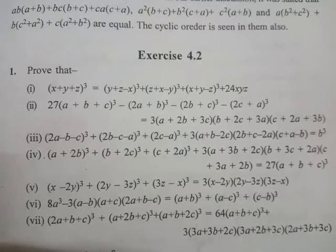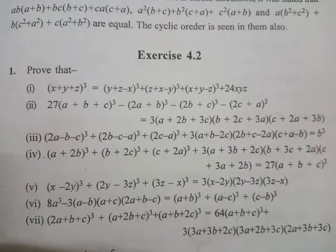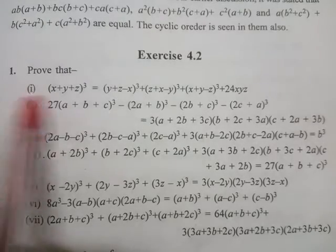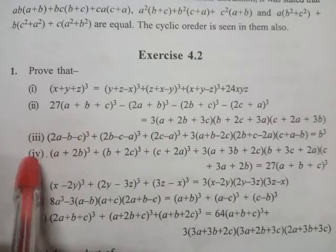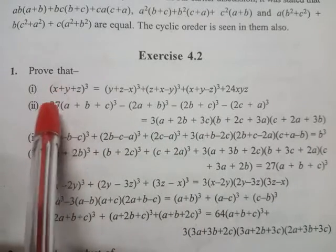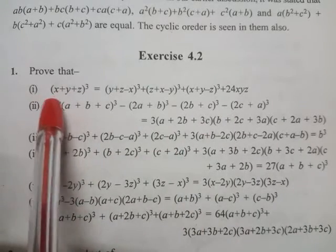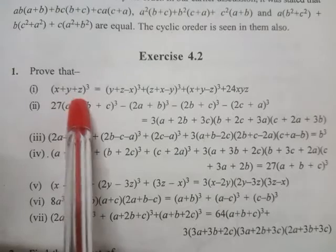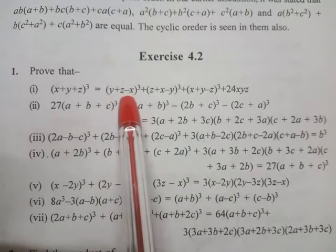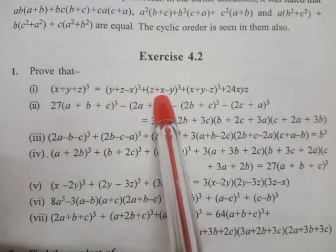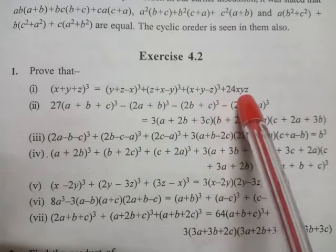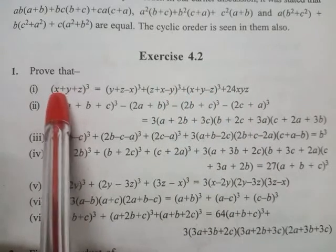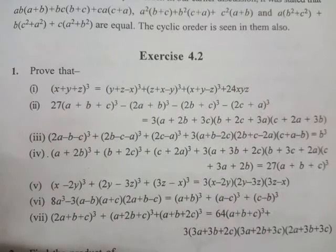Now look, students, we are going to start Exercise 4.2 plus 9 advancements. The first question is a prove-that problem. There are total 7 questions and every question is a prove-that. So the first one, Roman 1, is: x plus y plus z whole cube equals y plus z minus x whole cube plus z plus x minus y whole cube plus x plus y minus z whole cube plus 24xyz. Let's have a look at how to solve this one.